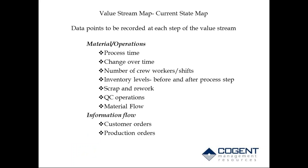When recording data for your current state map, the data points you want to look at for each operation are: process time, changeover time, number of workers per shift, and inventory levels — not accounting inventory, but what's stored in front of or after a machine. You also look at scrap and rework, QC operations, and overall material flow: where does material come from when it goes to a particular machine, and where does it go when it leaves? Information flow includes orders from a customer that justify making the product and production orders from a production control department.